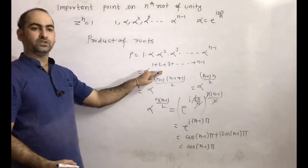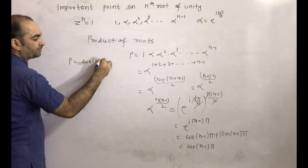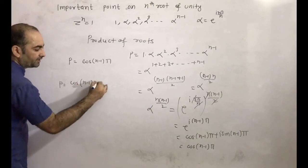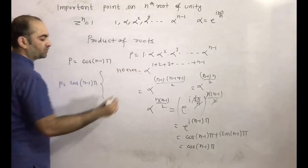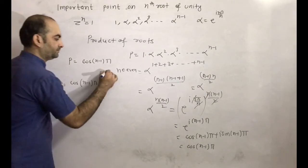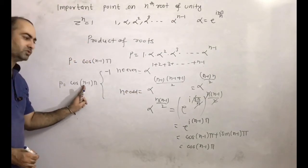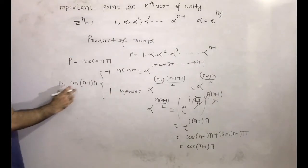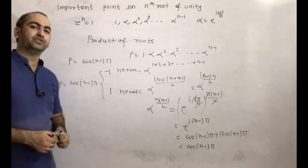So alpha^(n(n-1)/2) = cos((n-1)π), and the product P = cos((n-1)π). We categorize into two cases: if n is even, then (n-1) is odd, so cos(odd·π) = -1; if n is odd, then (n-1) is even, so cos(even·π) = 1. Therefore, product = -1 if n is even, and +1 if n is odd.